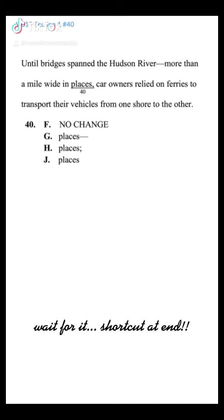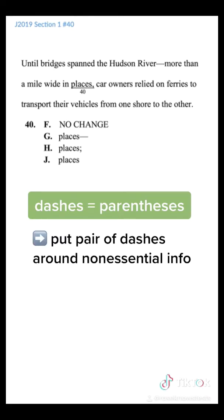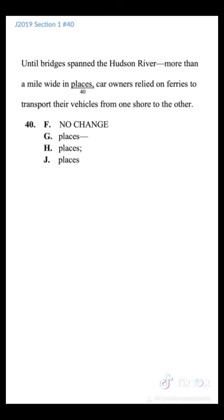One way to use dashes is kind of like how you use parentheses. If there's a part of a sentence that you can take out, you put parentheses or dashes around that part. Here, we can take out 'more than a mile wide in places' and the sentence works just fine. So, because we can take that part out, we need to put a pair of dashes around it — the correct answer is G.